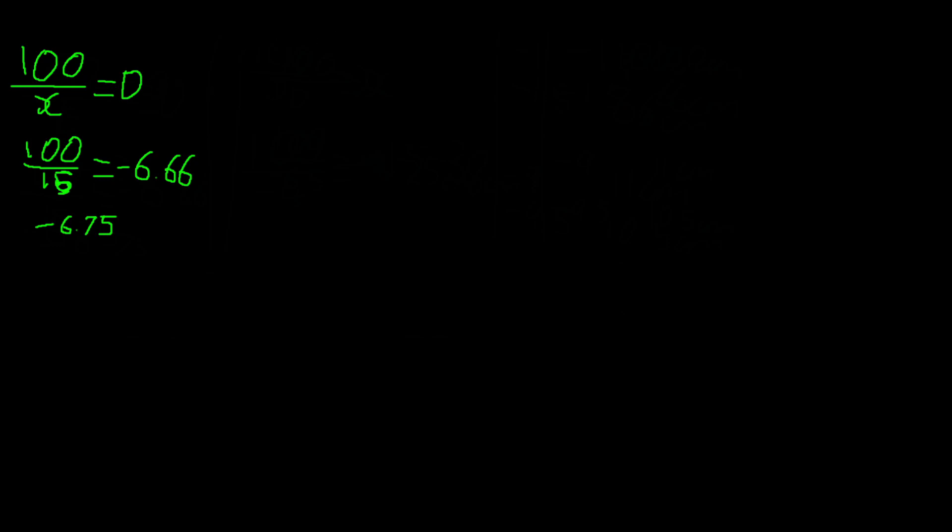Now how about the other way round? If we rearrange the equation we can find out the distance to blur given a certain level of myopia. So we just flip the equation, put the D here, put the X there, just some algebra and you can find out your distance to blur given a certain level of myopia.